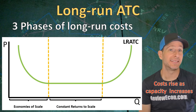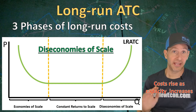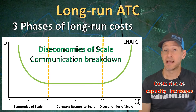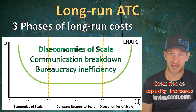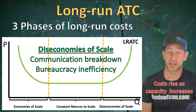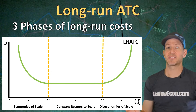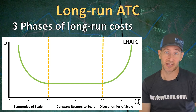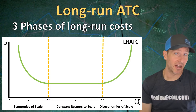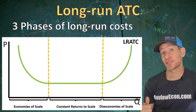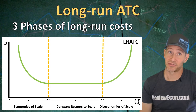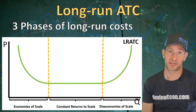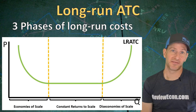We call that portion diseconomies of scale. The increasing average costs are caused by communication breakdowns between managers and employees, as well as bureaucracy inefficiencies. Essentially, the business has grown too large for management to keep the business efficient. Now, you aren't necessarily going to see all three of these phases on every long run average total cost curve, but most of the questions you see on the AP microeconomics exam focus on the downward sloping portion — meaning long run average total costs are decreasing as more output is produced — and we call that economies of scale.